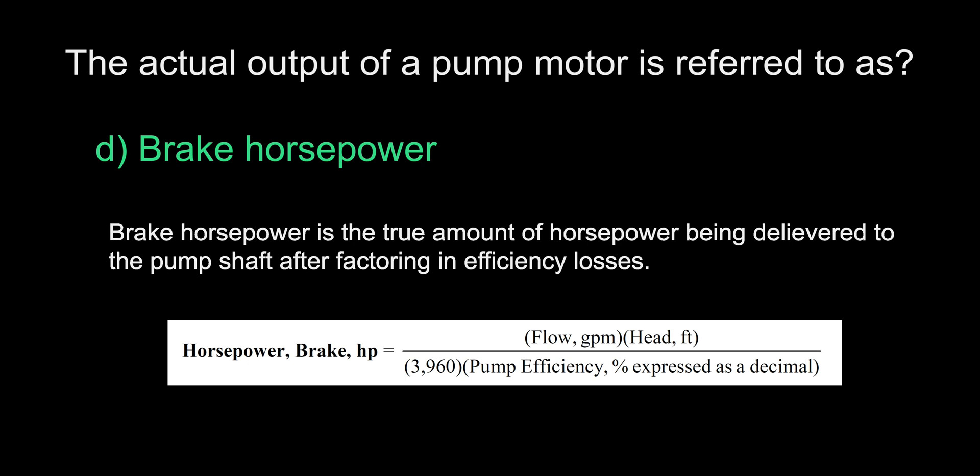The answer is D, brake horsepower. No pump can convert all its mechanical power into water power. This is due to friction losses in the bearings, water friction itself, and recirculation within the pump. To compensate for those losses, horsepower going into the pump shaft must be greater than the water horsepower leaving the pump. These additional power losses define the total brake horsepower requirement, BHP, at the pump shaft.